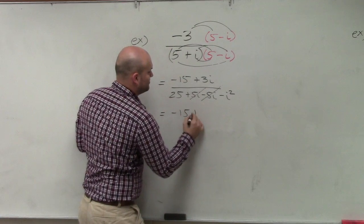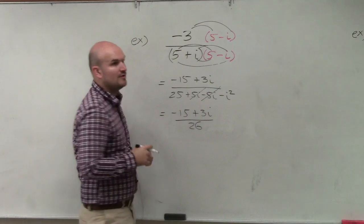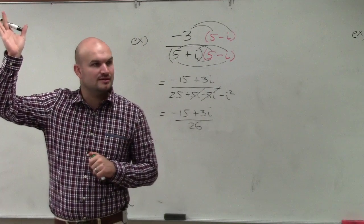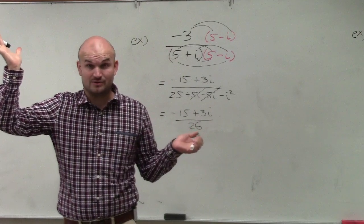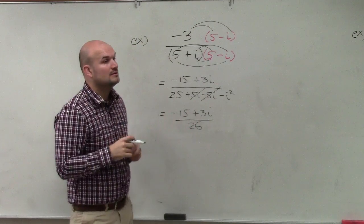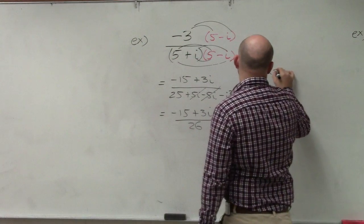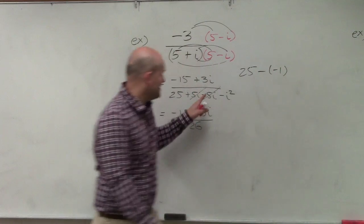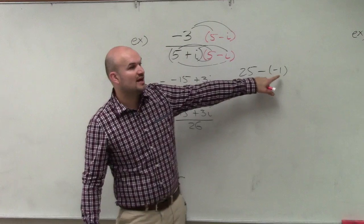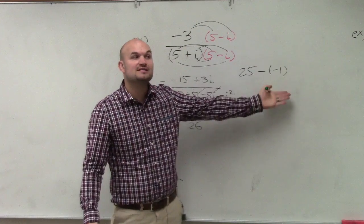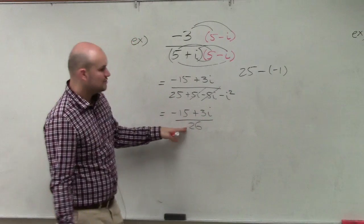So I have negative 15 plus 3i all over 26. Does everybody understand where I got 26? I add 25 minus a negative 1. The 5i and the negative 5i go to 0. i squared went to negative 1 minus a negative 1 is positive 1. 25 plus 1 is 26.